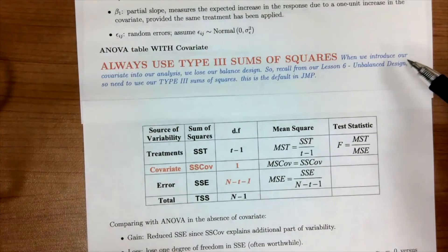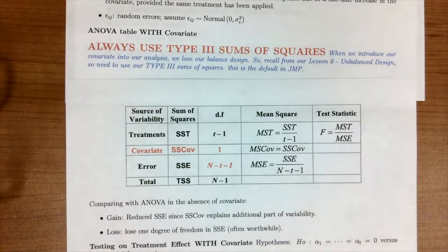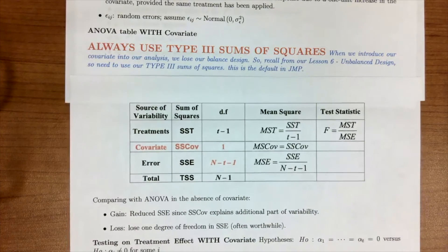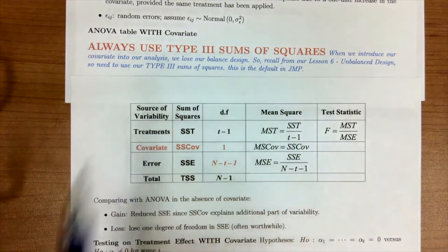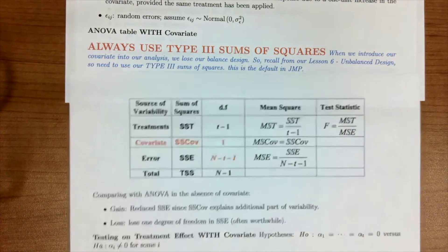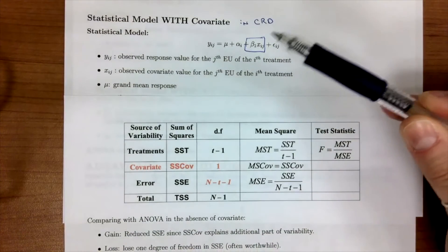A side note highlighted in blue: when we introduce a covariate into our analysis, we lose the idea of a balanced design. Recalling from lesson six on unbalanced designs, we need to use Type III sums of squares, which is the default in JMP. For R users, it is not the default in R, but I'll walk you through that when we get to the video. This Type III sums of squares requirement comes from lesson six.